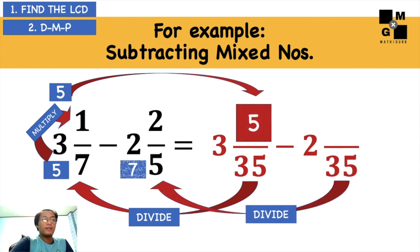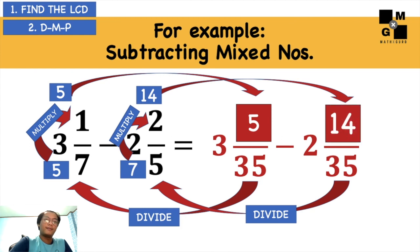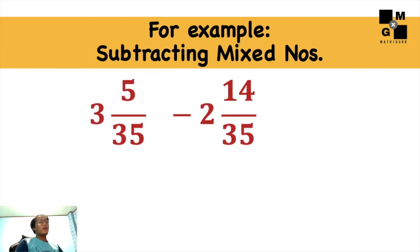Next, 35 divided by 5, that's 7. 7 times 2 is 14. Then I'll put 14 in. As you can see, we can still not proceed because 5 and 14 cannot be subtracted.